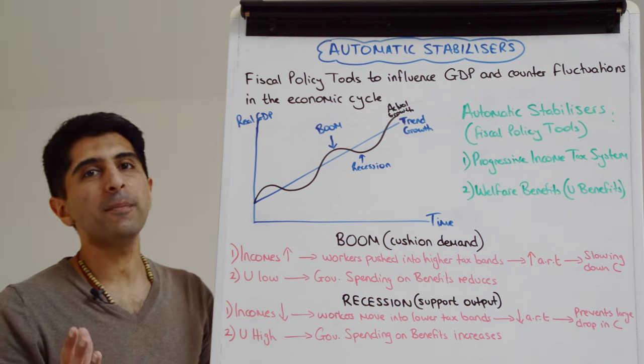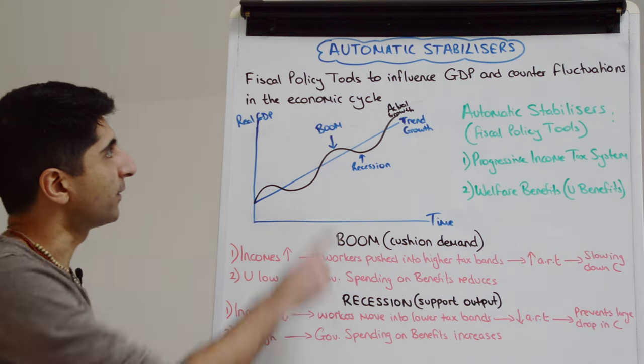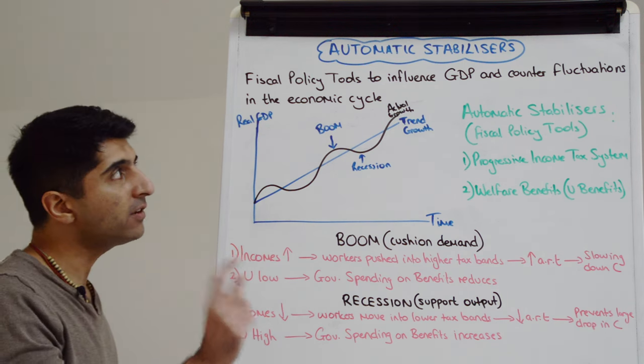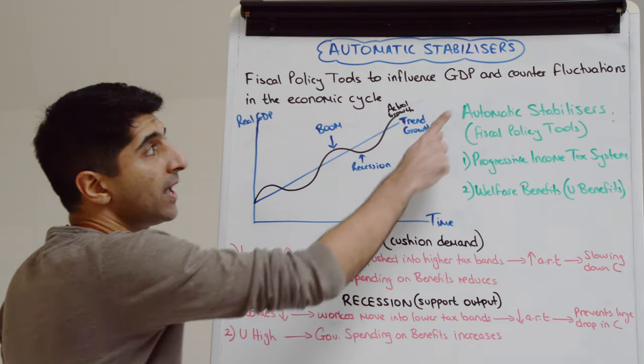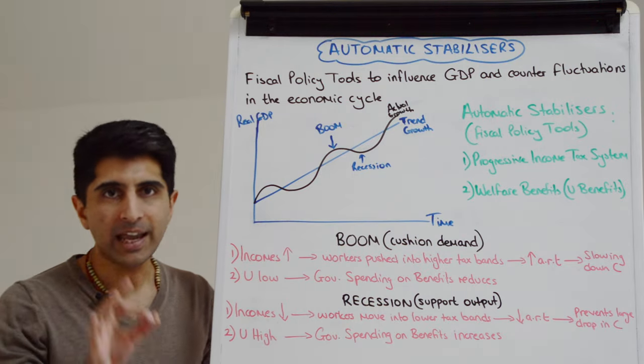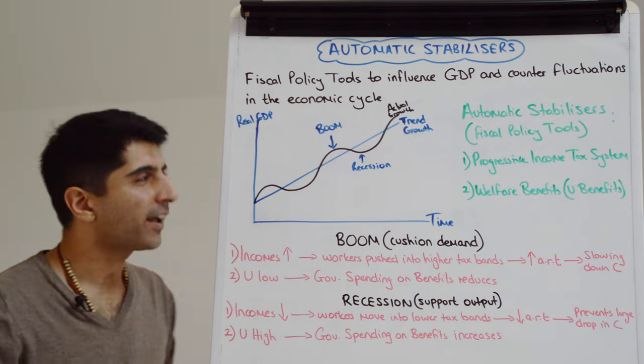Hi everybody! Automatic stabilizers are fiscal policy tools to influence GDP and to counter fluctuations in the economic cycle.